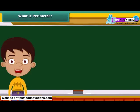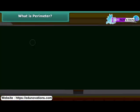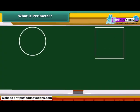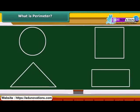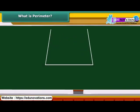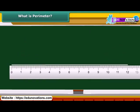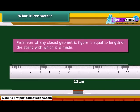Here is a simple technique of measuring the perimeter of a shape. Take a closed geometric shape — such as a circle, square, triangle, or rectangle — made of string. Unwind the string and measure its length. The length of the string is the perimeter of the chosen geometric shape. We can generalize by saying that the perimeter of any closed geometric figure is equal to the length of the string with which it is made.